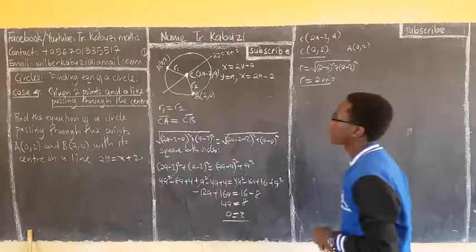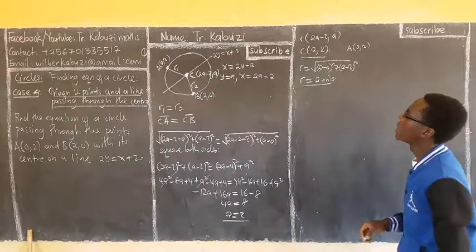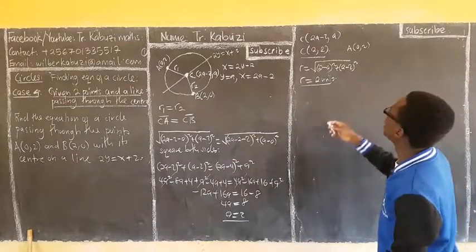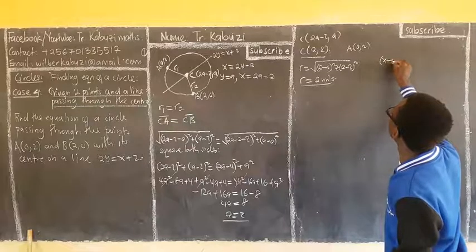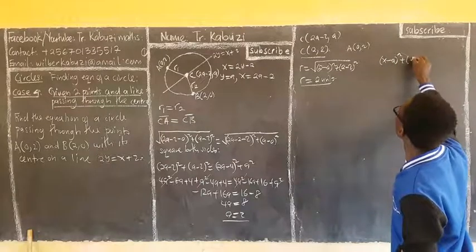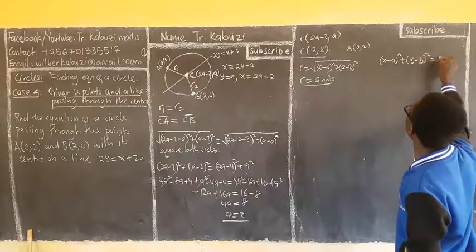Now, from there, if I create my, if I quote my radius. The circle, x minus a squared, y minus b squared, equal to r squared.